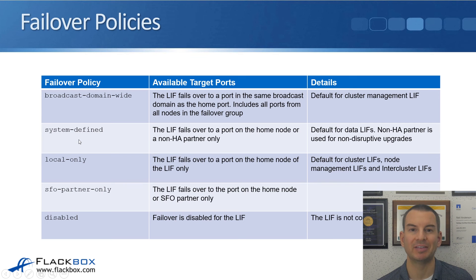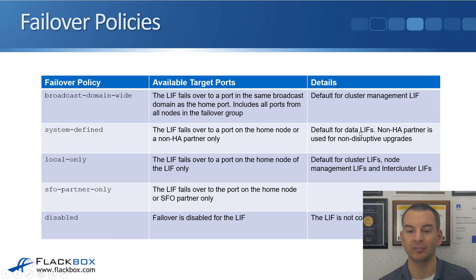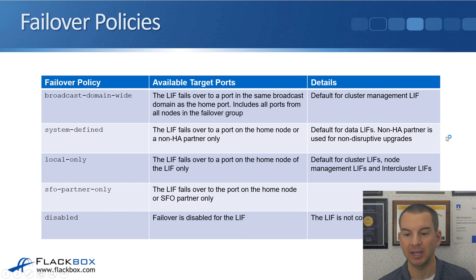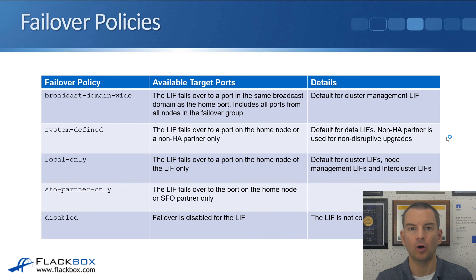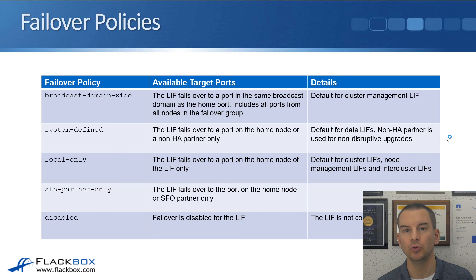The next policy is system-defined: the LIF fails over to a port on the home node or a non-HA partner only. This is the default for data LIFs for normal client NAS access. The reason it excludes the HA partner is that during upgrades, nodes come up and down, and we want to keep failover off the HA pair. If a port fails, it fails over to another port in the same broadcast domain, but not to the HA partner. This is what we want for data LIFs, so we don't change the default.